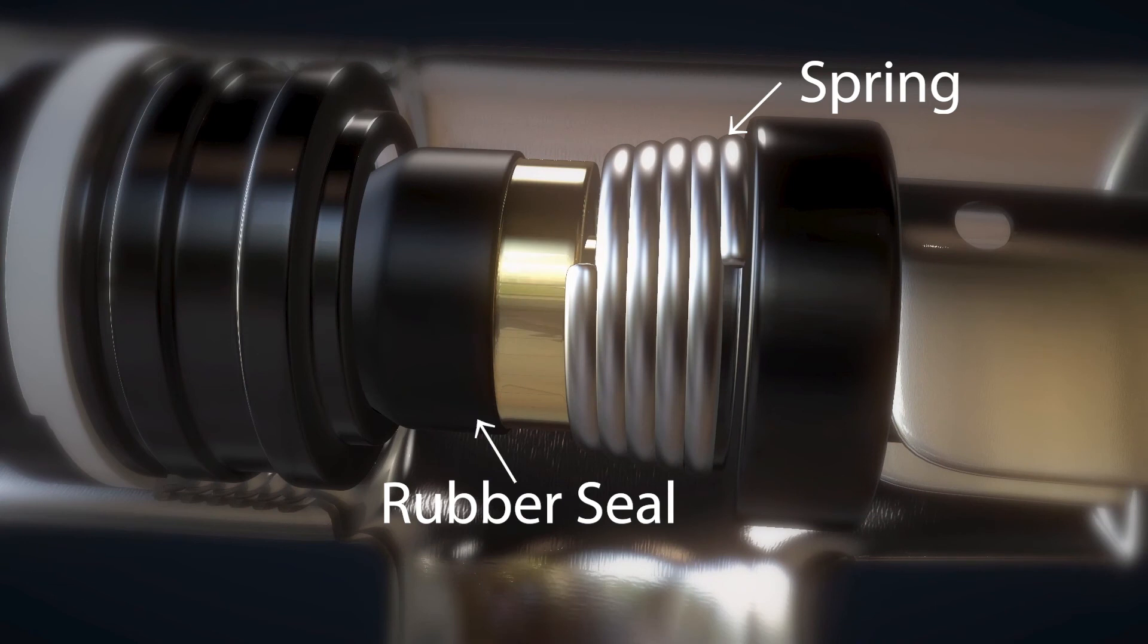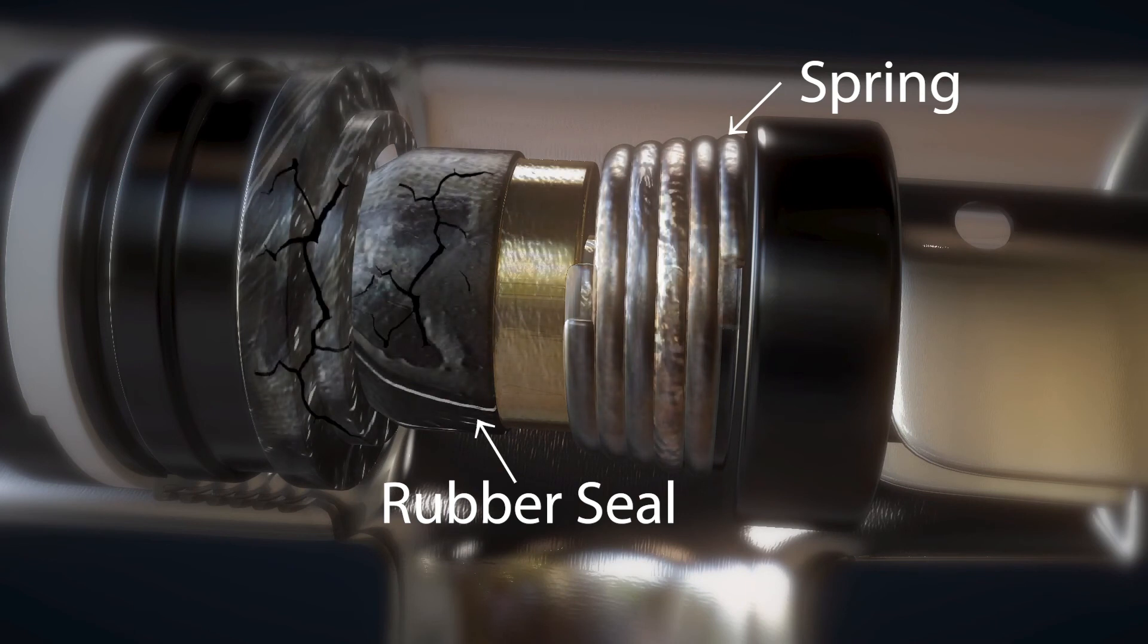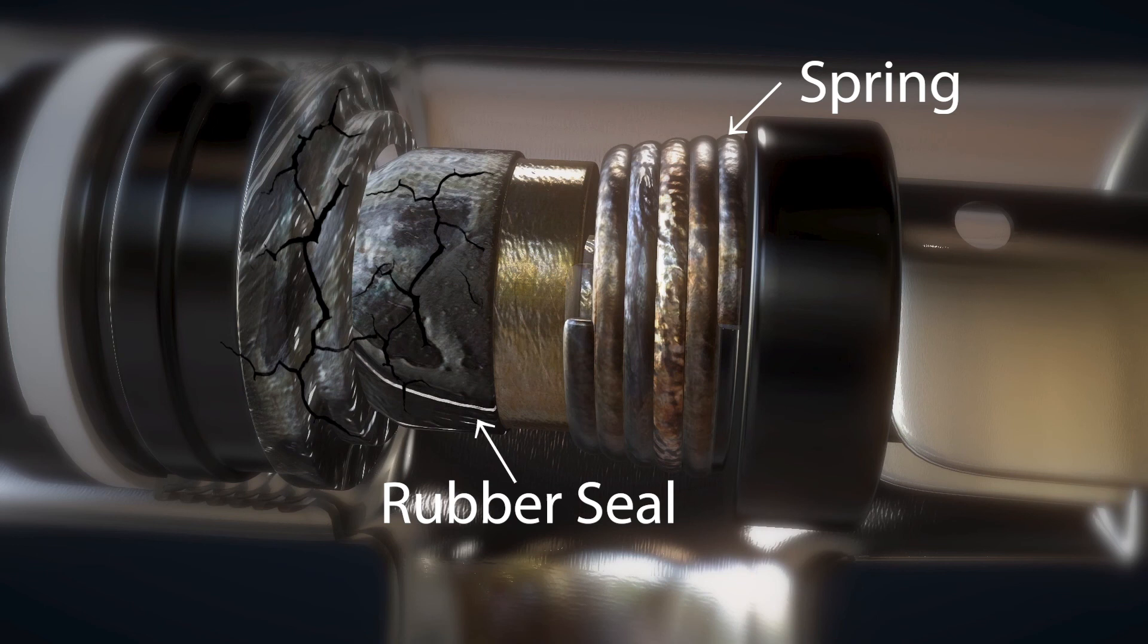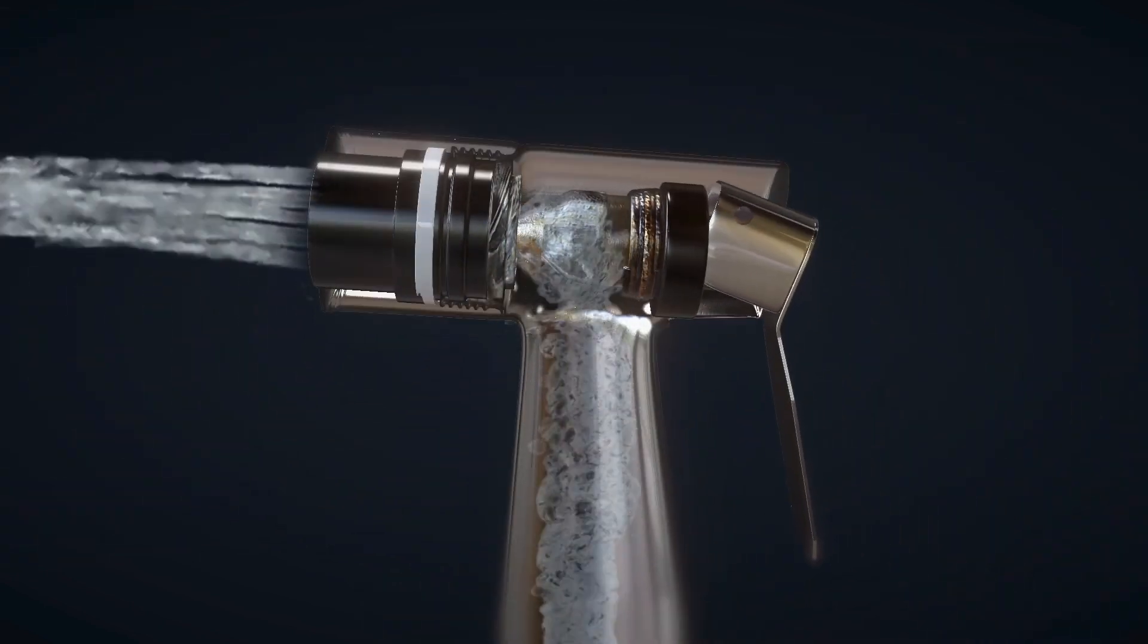Spring valves also leak from debris and sediment in the water getting stuck in the rubber seal or from deterioration and corrosion of the rubber seal and spring. For this reason, spring valves are not approved by the plumbing code for water valves in homes or businesses and the reason why spring valves should not be used in handheld bidets.